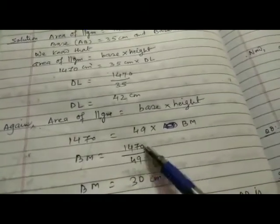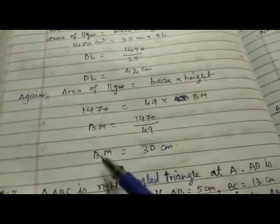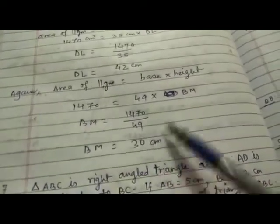Therefore BM equals 1470 upon 49. Cancel karenge 49 se, so BM equals 30 centimeter.